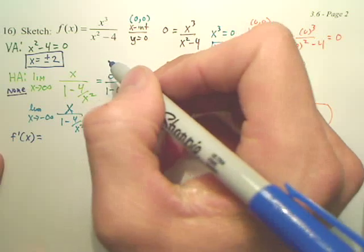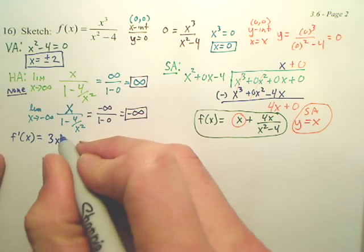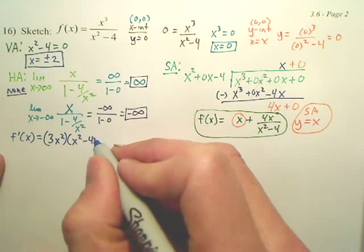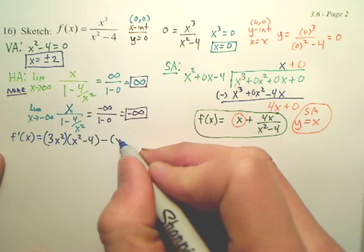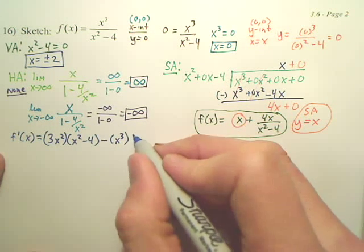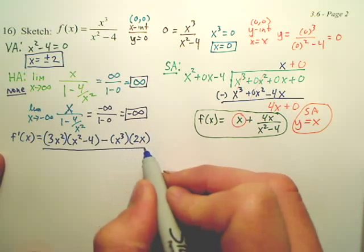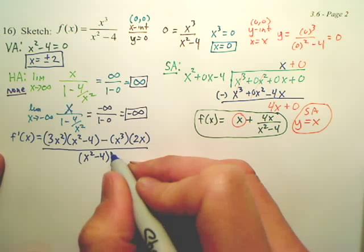For the first derivative, it's a quotient rule. Derive that, so you have 3x squared. Leave the x squared minus 4, minus, leave the x cubed, derive the second piece, which is just 2x.